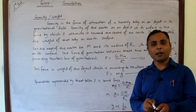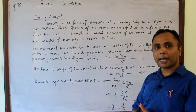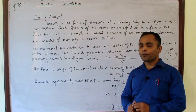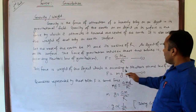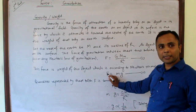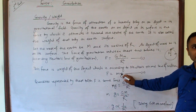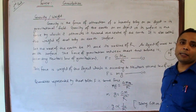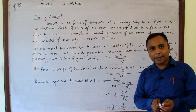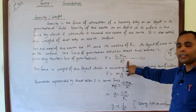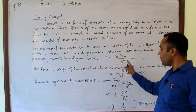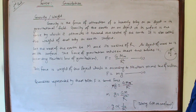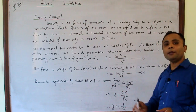According to Newton's second law of motion, which you studied in class 9, the weight or force on the object F equals the product of mass and acceleration due to gravity: F = mg. Both equations represent the same gravitational force — the weight of the object. So we can equate them: mg = GmM/R². Canceling the mass of the object m from both sides, we get g = GM/R².